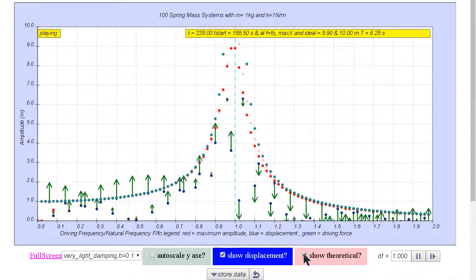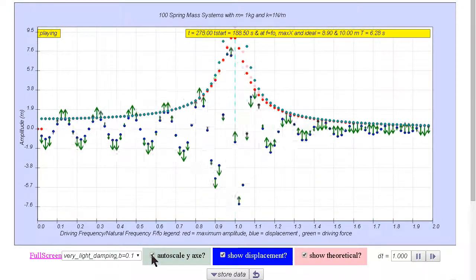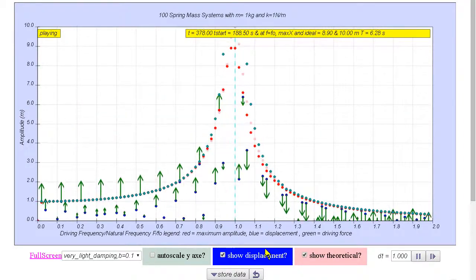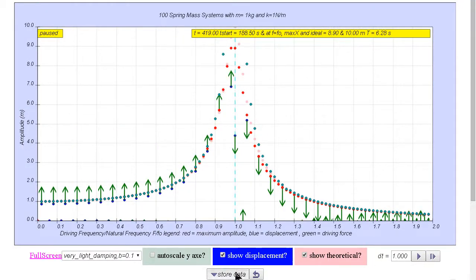You can also click on the show autoscale Y, so you can see that oscillation actually has both negative and positive. And when the simulation has run for long enough time, we can change it.